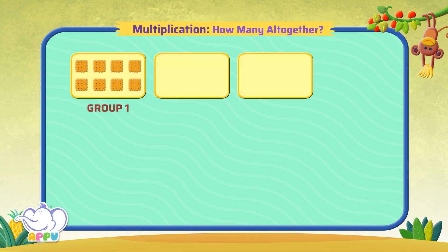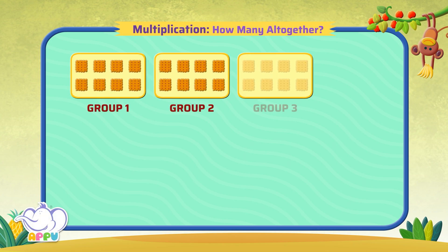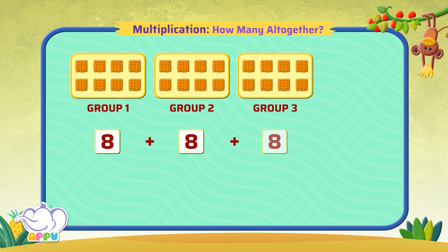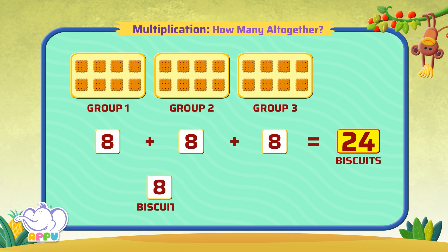There are 8 biscuits in each group and there are 3 groups. So there are 8 biscuits in group 1, plus 8 biscuits in group 2, plus 8 biscuits in group 3, which equals 24 biscuits in all. Or we can write 8 biscuits in 3 groups, which is again equal to 24.